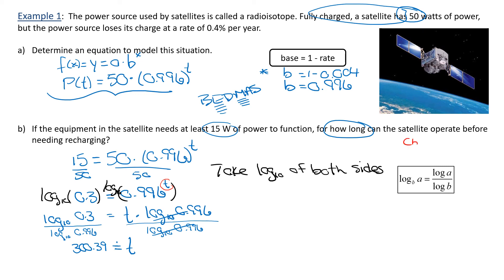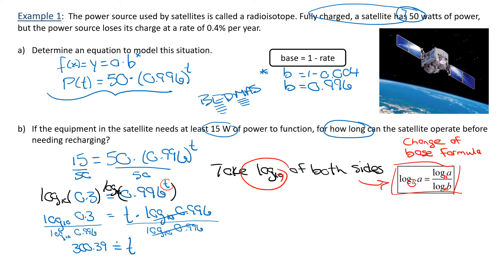I want to point out the change of base formula shown here in the box. We need that when we don't have a base of 10, because our calculators only work with base 10. In this question we introduced our own base of 10. The change of base formula is what's needed when we don't have a base of 10 and need to convert to one. We could revert back to a base without 10, but that's how we go from a base that is not 10 to a base that is 10.